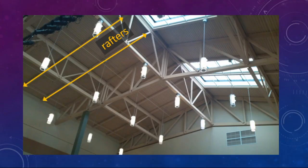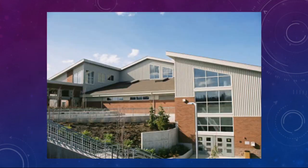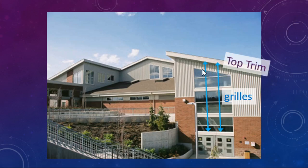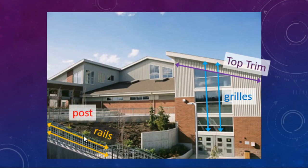In the ceiling, we have rafters forming parallel lines, and each beam would be forming a transversal. On the outside of the building, the grills on these windows are parallel lines, and the top trim piece would be a transversal. On the stairs, the rails form parallel lines and each post forms a transversal. We also see these lines in a parking lot or on a football field.